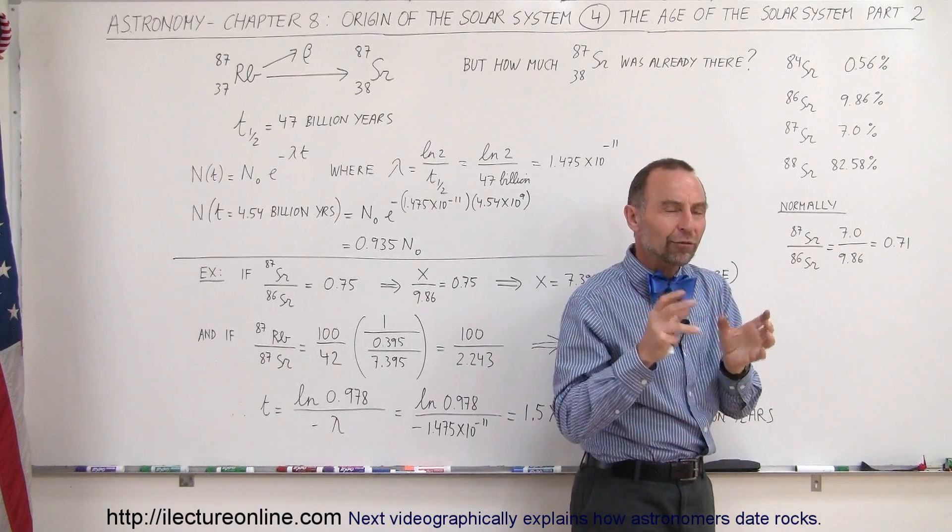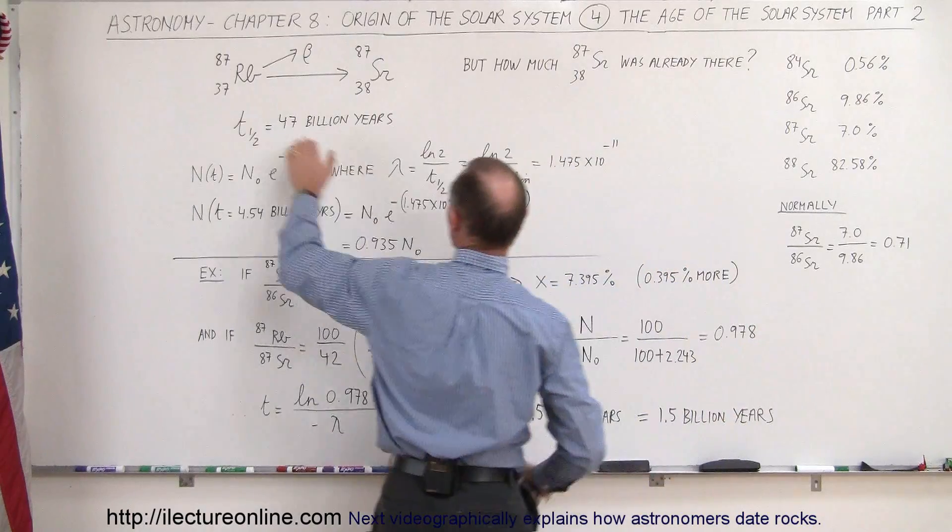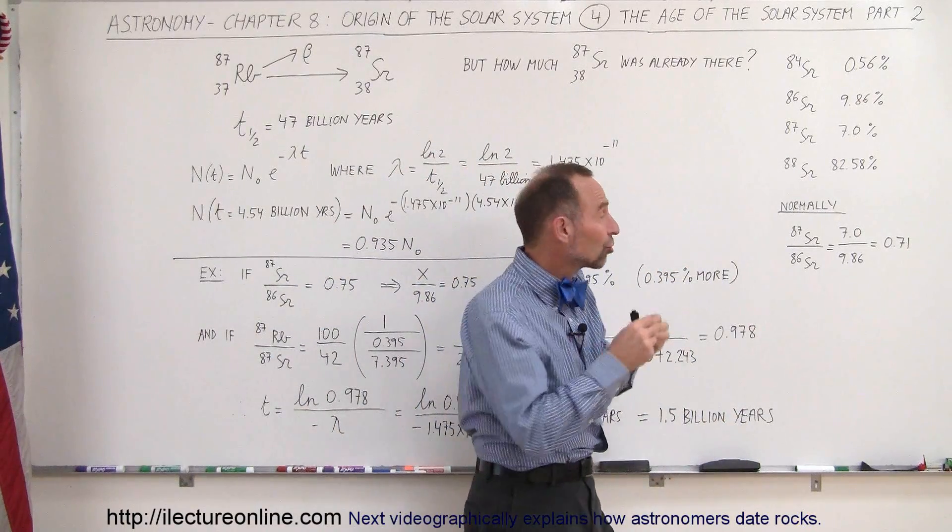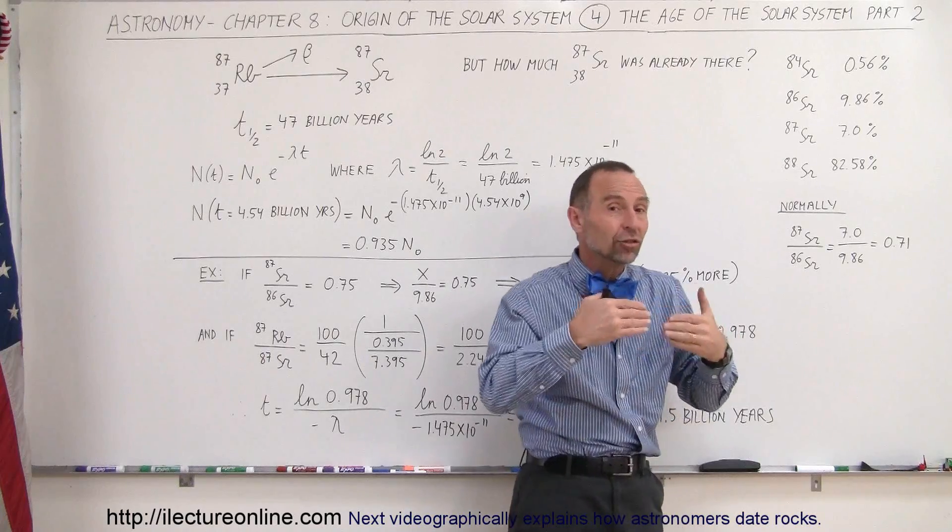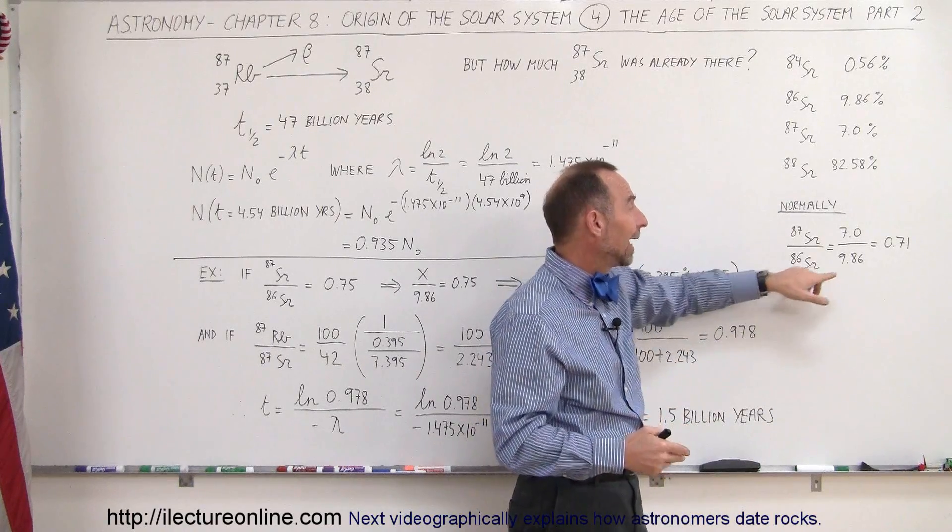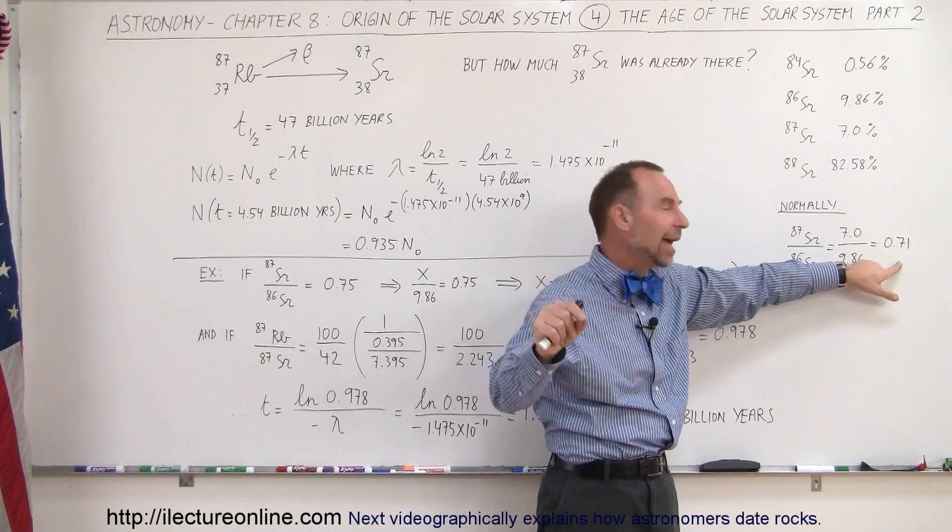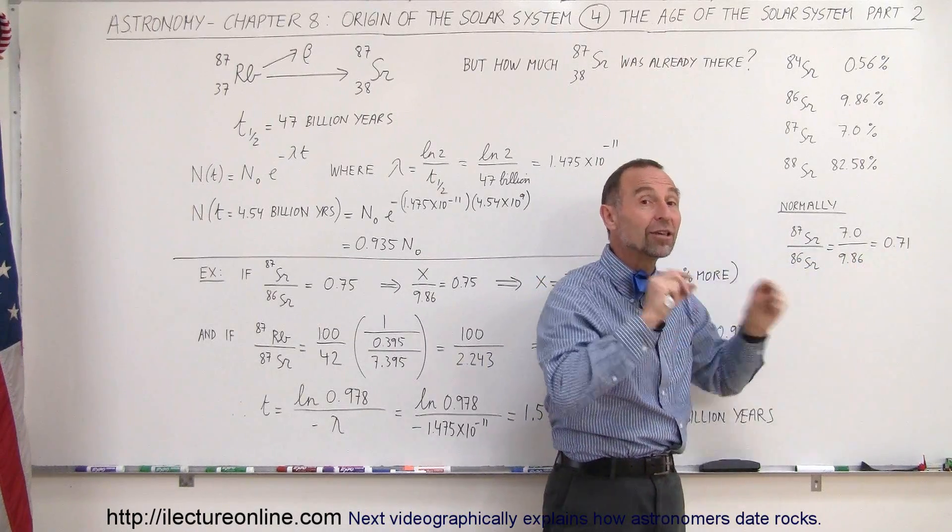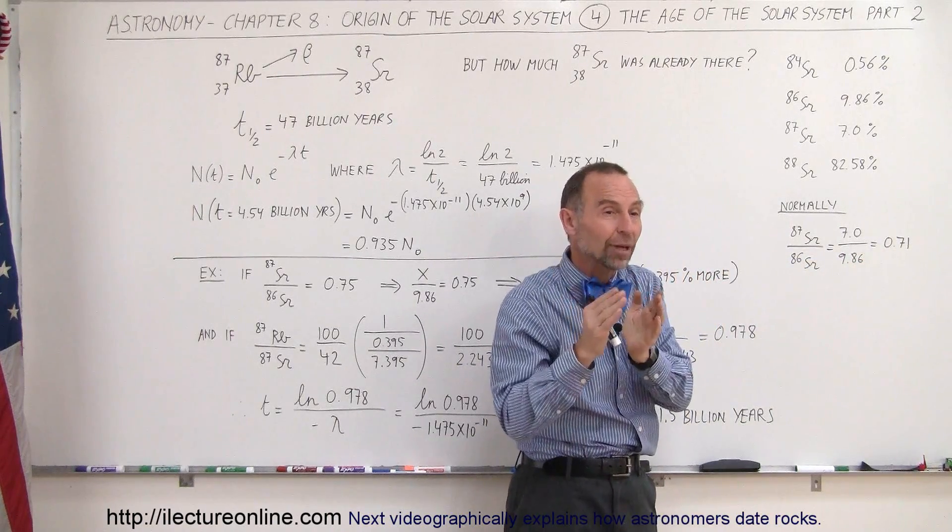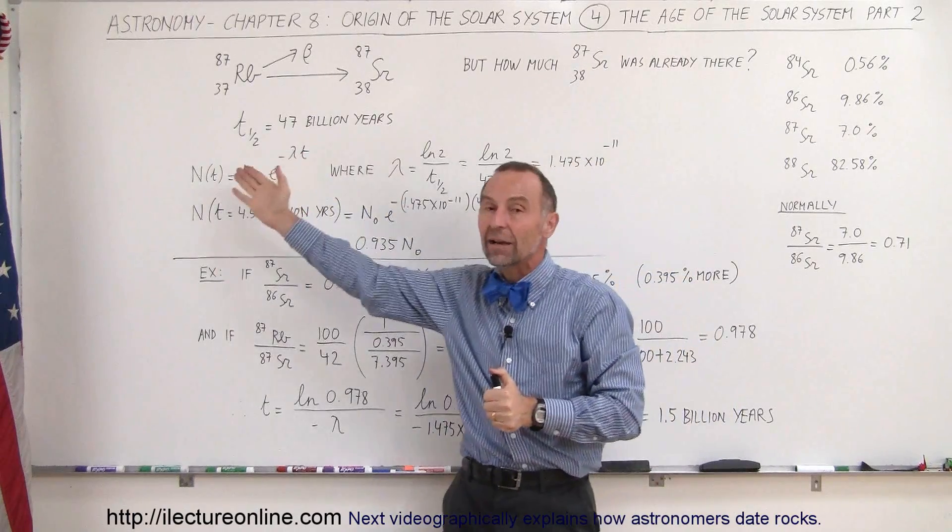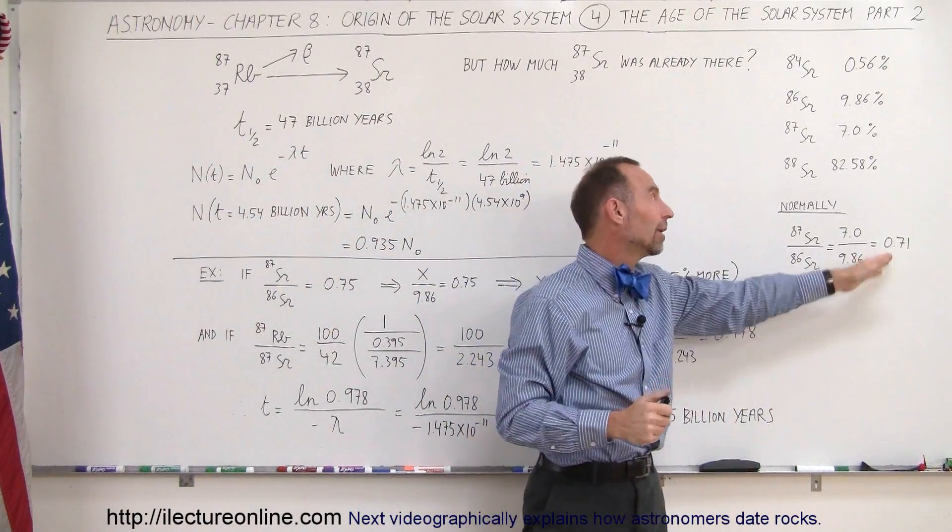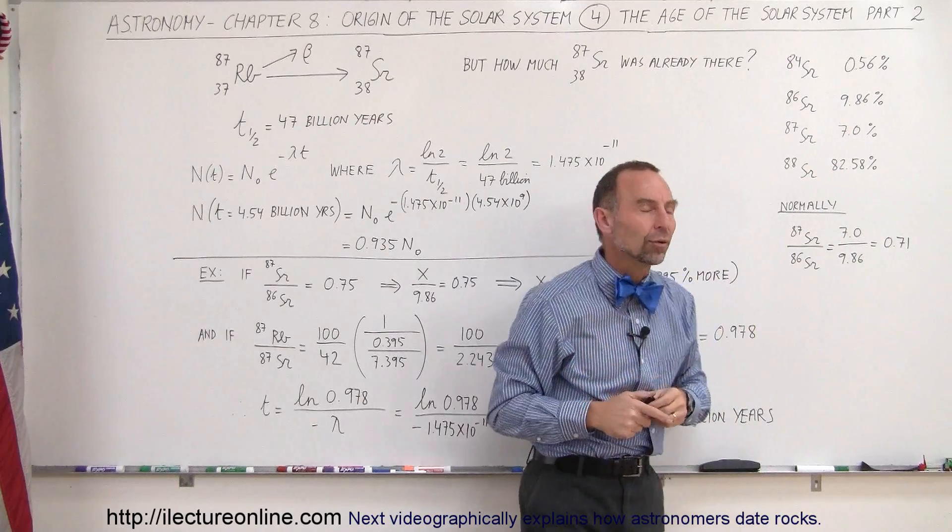If you now go find a rock that has radioactive Rubidium in it, and then you figure out how much Strontium is there relative to the other Strontium, 86, and the number is greater than 0.71, then you know that some of that Rubidium has then decayed into Strontium, and you can figure out how much Strontium is as a result of the decay of Rubidium and not already present in the crust of the Earth.